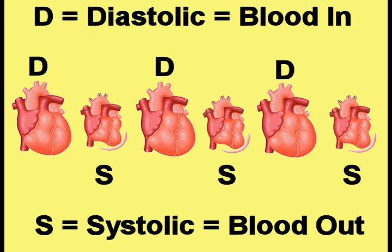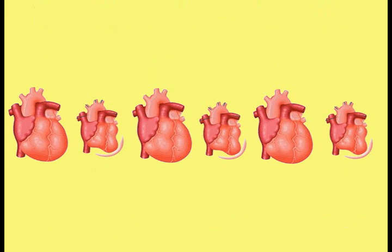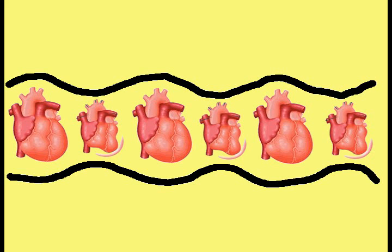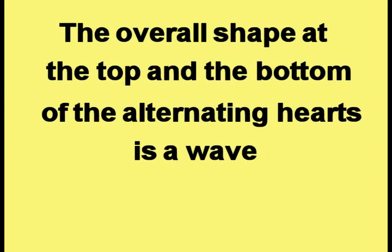This picture shows multiple alternating instances of the heart in the diastolic phase and the systolic phase — in simple language, a series of alternating large and small human hearts. A line following the contours of the alternating hearts is drawn above and below the hearts to make it clear what that shape is. The overall shape at the top and the bottom of the alternating hearts is a wave.